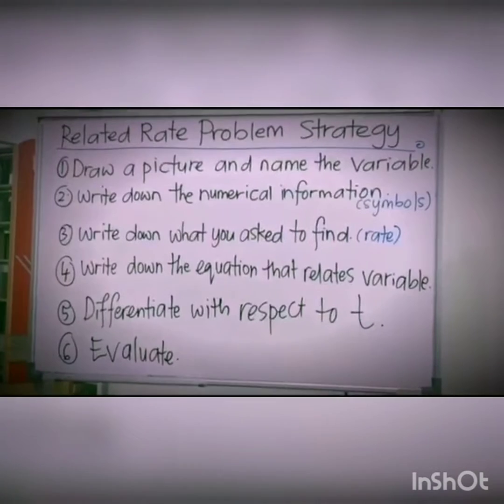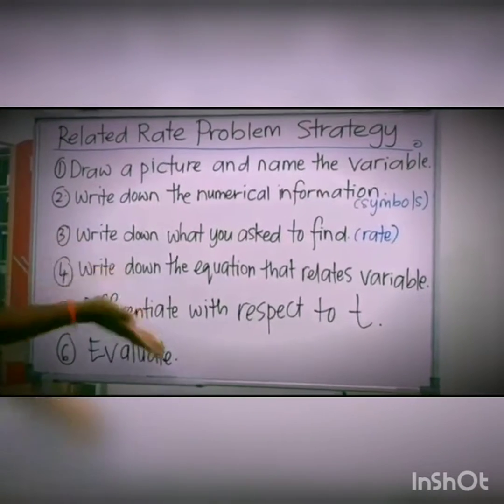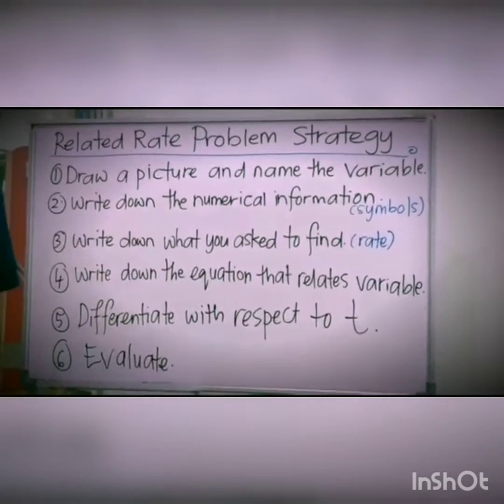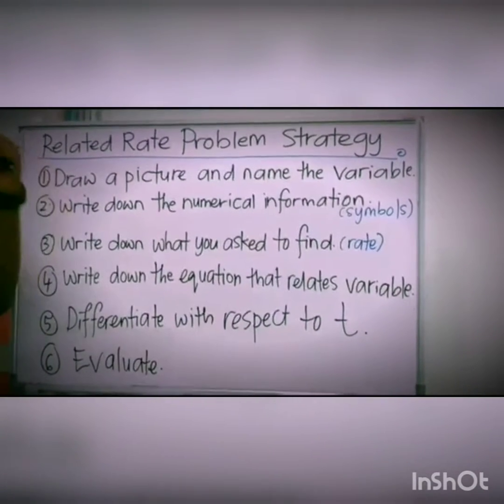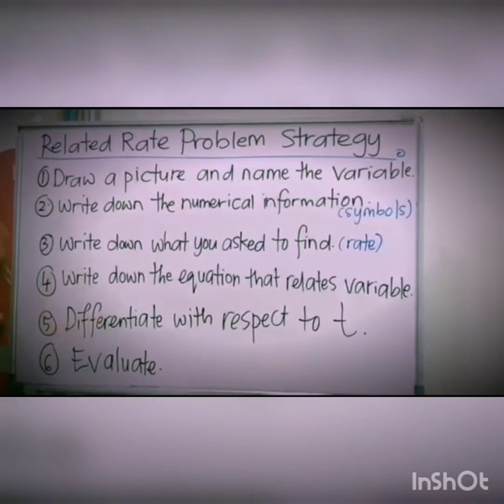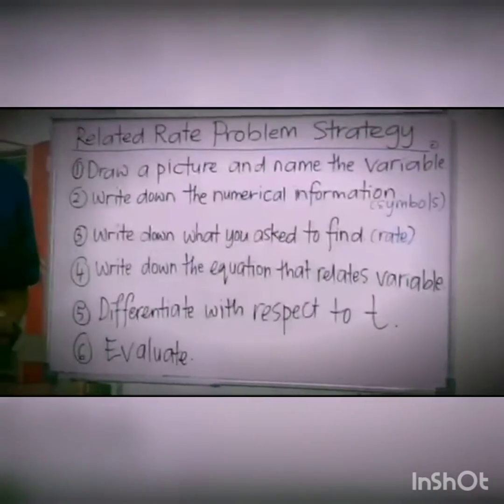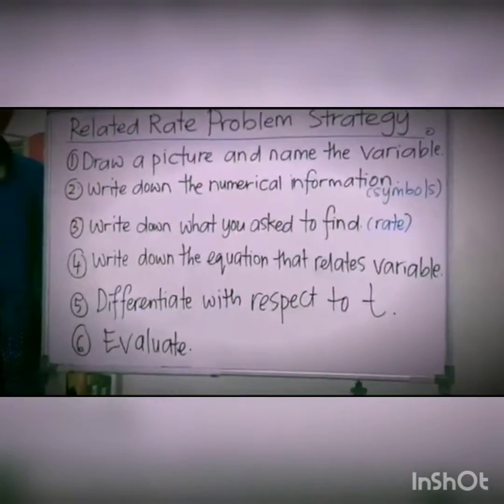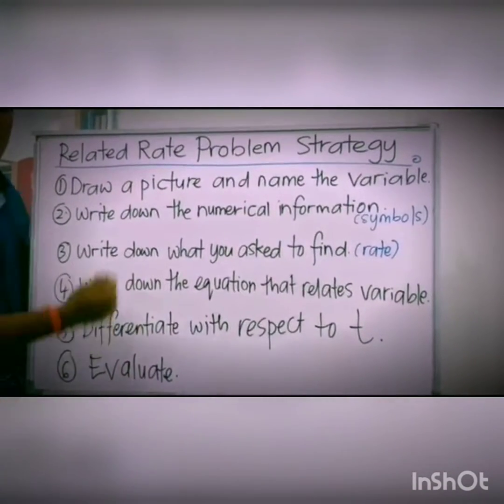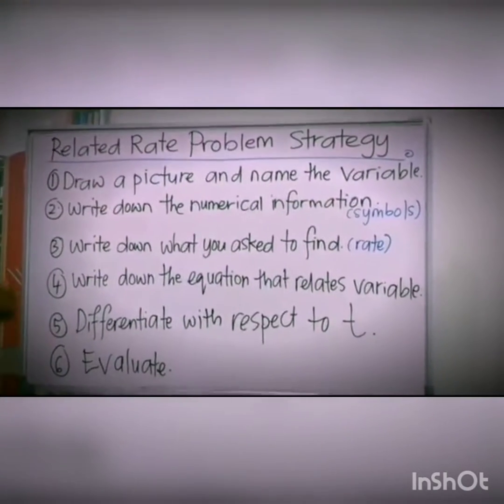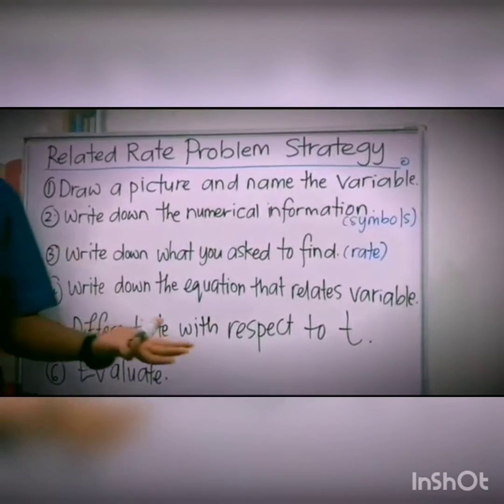In the third strategy, you write down what you are asked to find, which is usually a rate expressed in the form of derivatives. In the fourth strategy, you write down the equation that relates the variables. We have to write down the equation that we want to find that is not present in the particular problem statement. Then, we differentiate with respect to t. When we talk about rate, it means time. Finally, we evaluate the problem and find the unknowns.